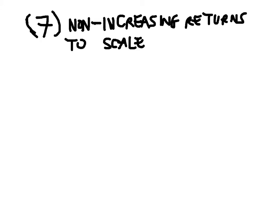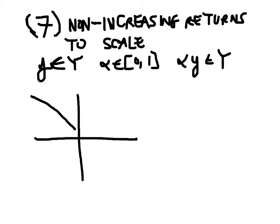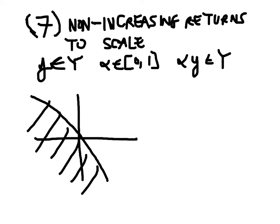The seventh property is non-increasing returns to scale — in a nutshell, the possibility of scaling down. Scaling down means that if a particular production plan is in the production set, then if I pick a number alpha between 0 and 1, then alpha y must also be in the production set. For example, with a given production set and production plan y, any alpha y that shrinks this production vector is also included in the production set.